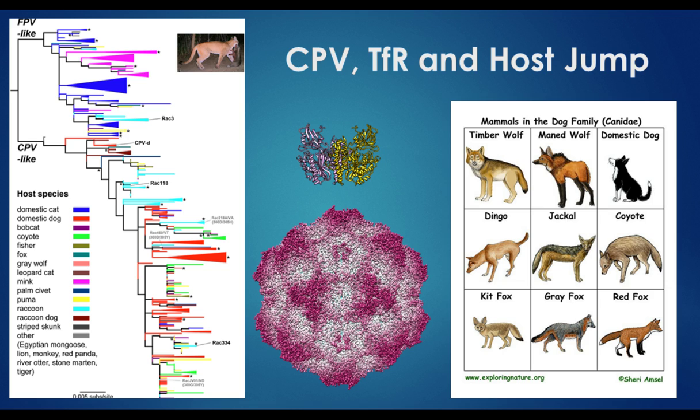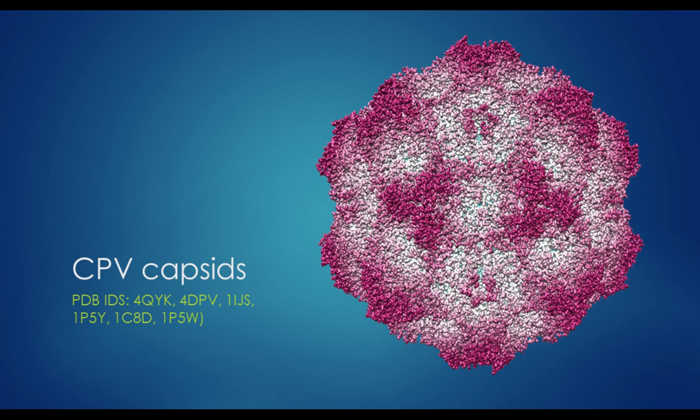In doing some binding assays, we found that the transferrin receptor for the black-backed jackal, and that's the canine in the center of that group, binds the capsid with pretty high affinity. So we picked that for these structural studies.